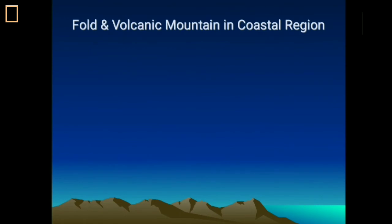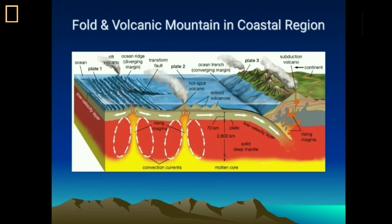The plate tectonic theory also explains fold mountains and volcanic mountains in coastal regions. As plates move apart in the coastal region, magma erupts and creates volcanic eruptions — in the deep sea, in coastal regions, and within landmasses. The plate tectonic theory can explain different changes in coastal regions. The collective changes of fold and volcanic mountains, or any volcanic eruptions happening from the movement of the same plate, is called neotectonic movement.